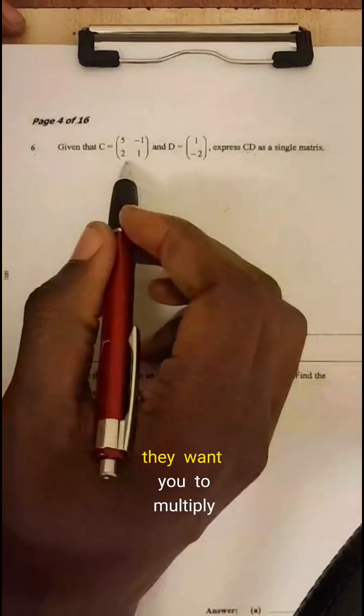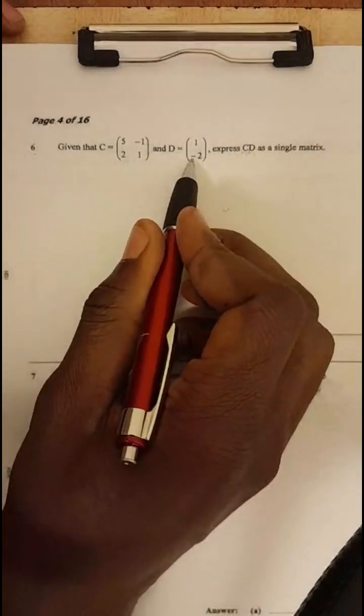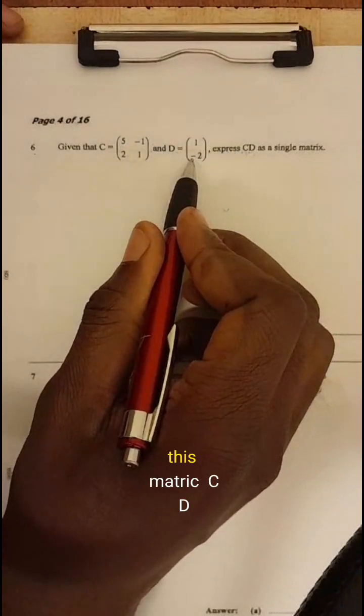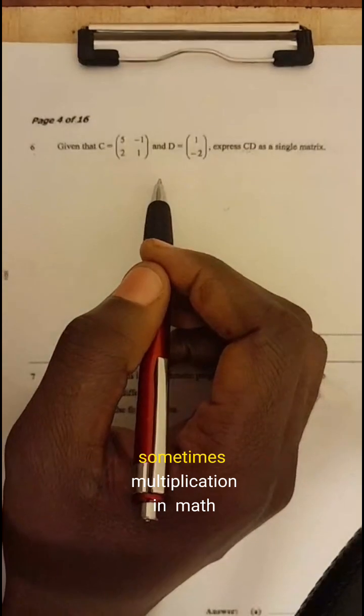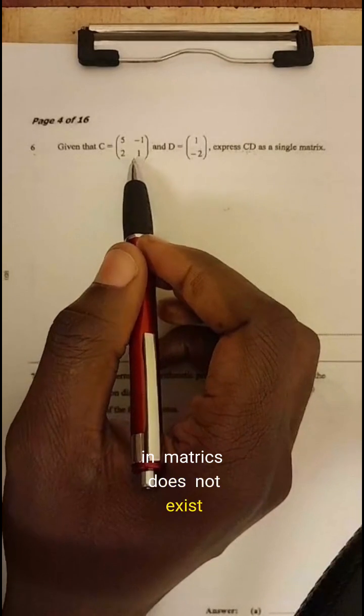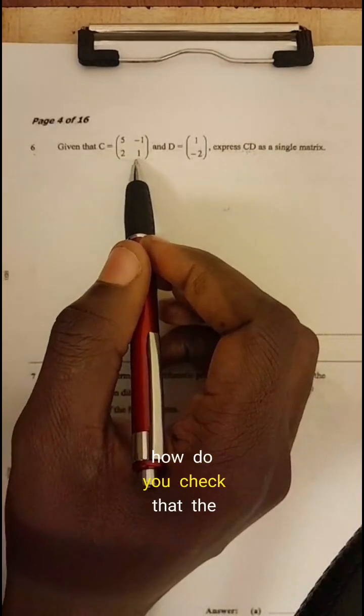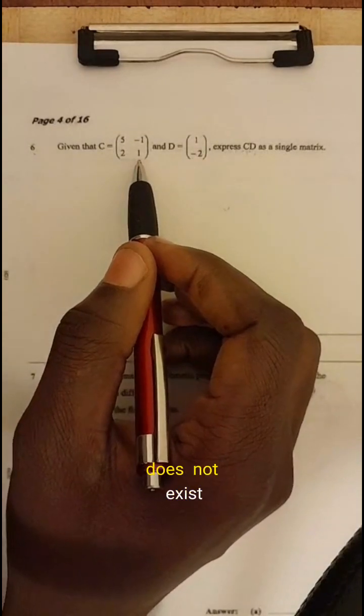So CD, they want you to multiply this matrix C by this matrix D. Okay? So sometimes multiplication in matrix does not exist. So how do you check that the multiplication exists or does not exist?